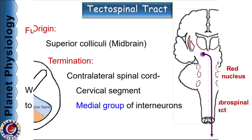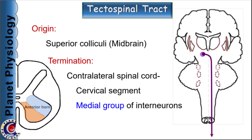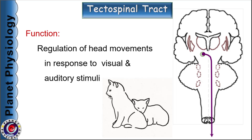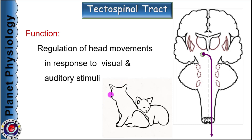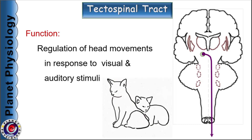The next extrapyramidal tract is the tectospinal tract, which originates from the superior colliculi in the midbrain. These fibers also cross the midline and then descend contralaterally. They terminate in the medial group of neurons in the anterior horn of the spinal cord. The tectospinal tract is concerned with regulation of head movements in response to visual and auditory stimuli.